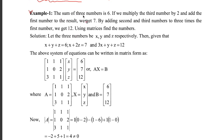The sum of three digits is six, so you will get this equation. Let us consider three digits x, y, and z. From this sentence you can create this equation. If we multiply the third number by two and add the first number to the result we get seven — it means this equation.